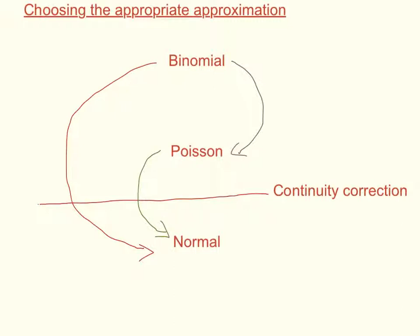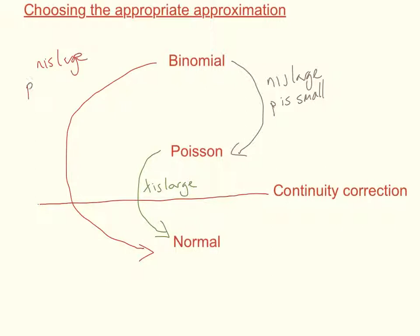Now the conditions for each one are different. For the Poisson distribution to be approximated to normal, it has to be that lambda is large. For binomial to be approximated to Poisson, it's when n is large and p is small. And then finally, to go from binomial to normal, that's when n is large and p is close to 0.5.